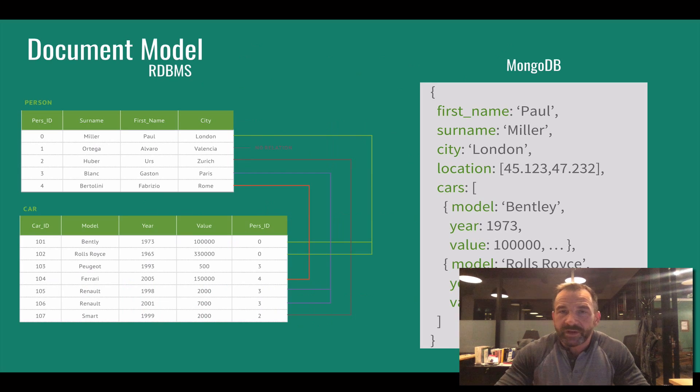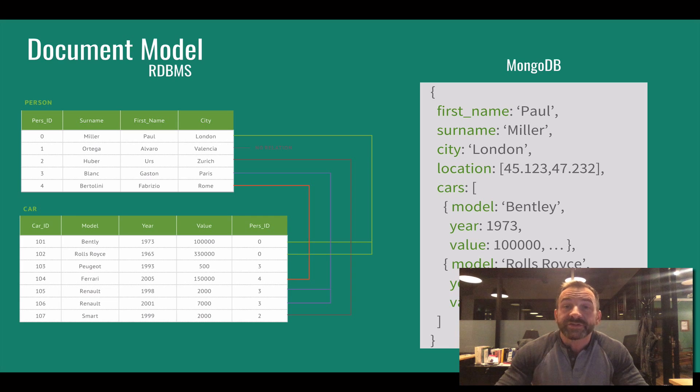When we store and manipulate data in MongoDB, we do so in JSON documents. That's what you see on the right there.